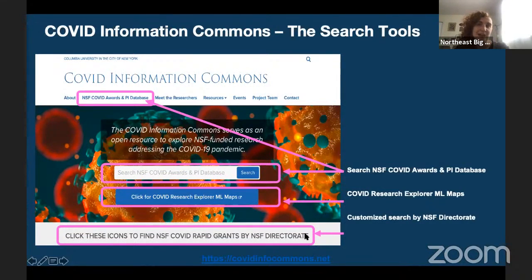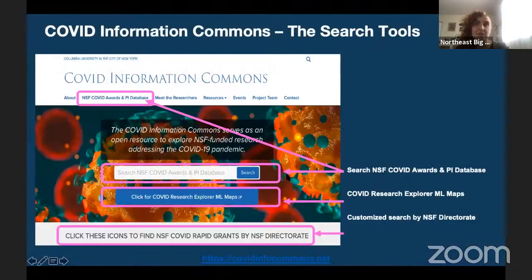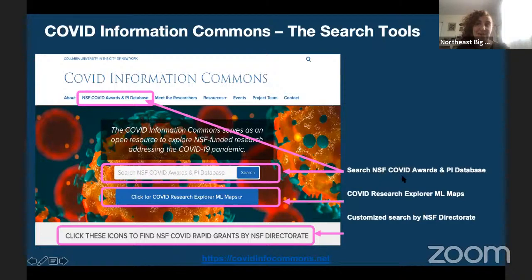We are really proud that over the past month, thanks to the efforts of the entire COVID Info Commons team, including our great students who are here today, that we are able to launch a new feature that is called the NSF COVID Awards and PI Database. That is accessible both at the top link there and in the search bar that is highlighted in the center of that image.